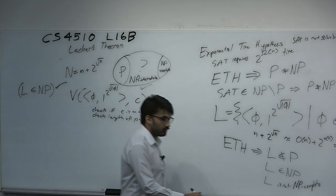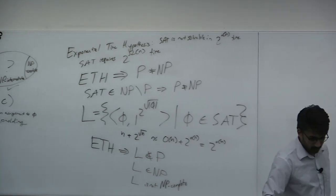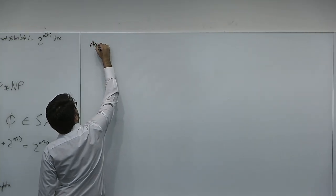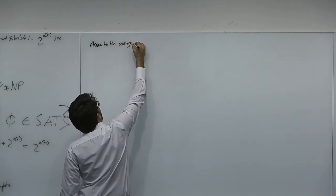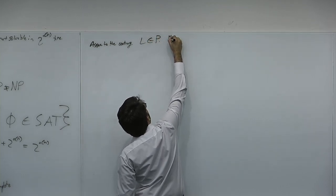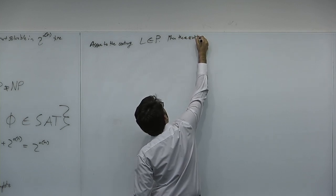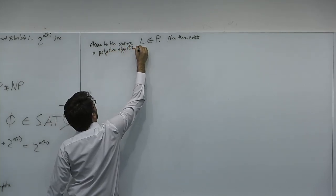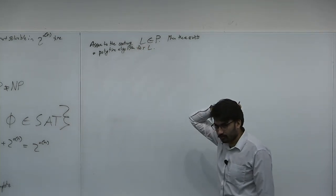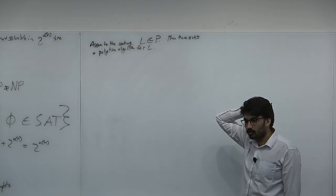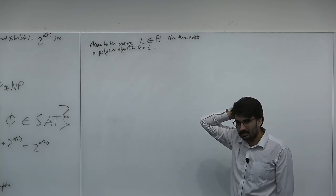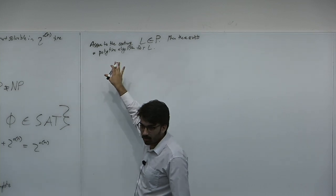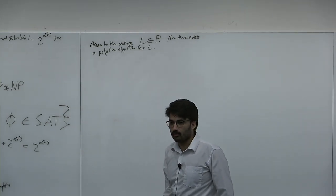Now we need to prove that L is not in P. We're going to assume to the contrary that L was in P. Then there exists a polynomial-time algorithm for L. We're going to use this polynomial-time algorithm for L to unpad it and solve SAT too fast. If we can solve SAT too fast, we're going to violate ETH — we'll give a sub-exponential time algorithm for SAT if there is a polynomial-time algorithm for L.